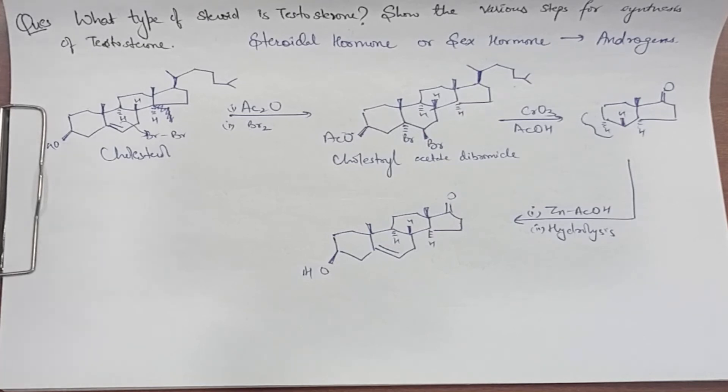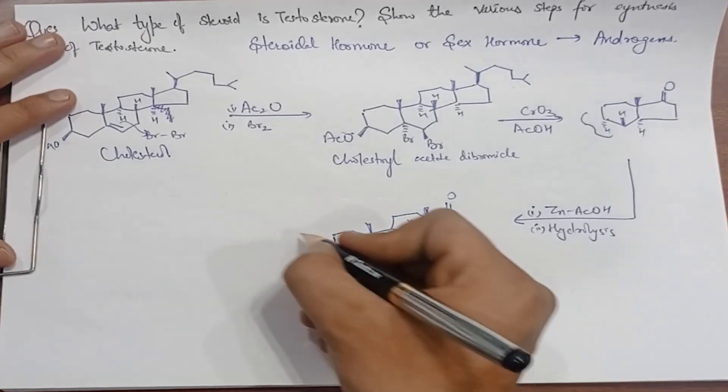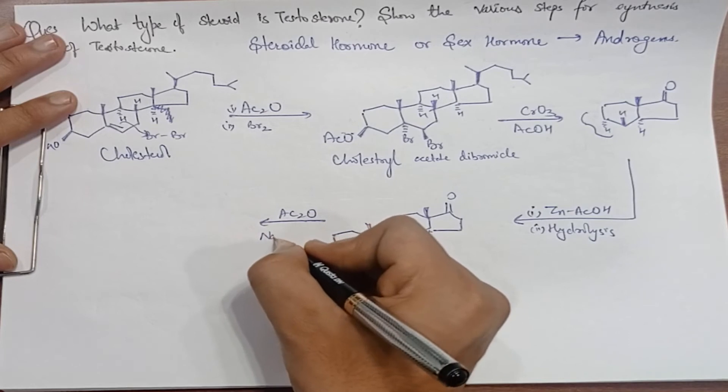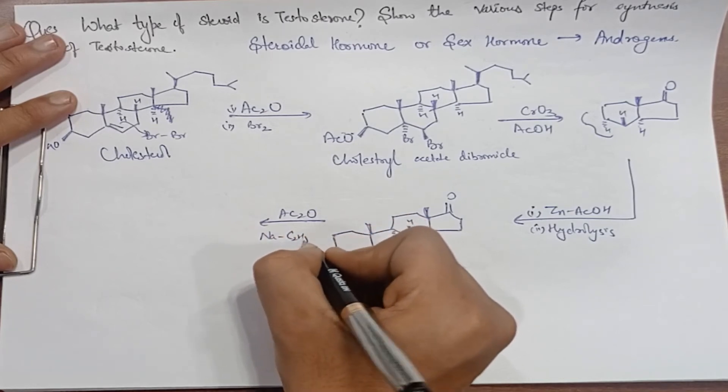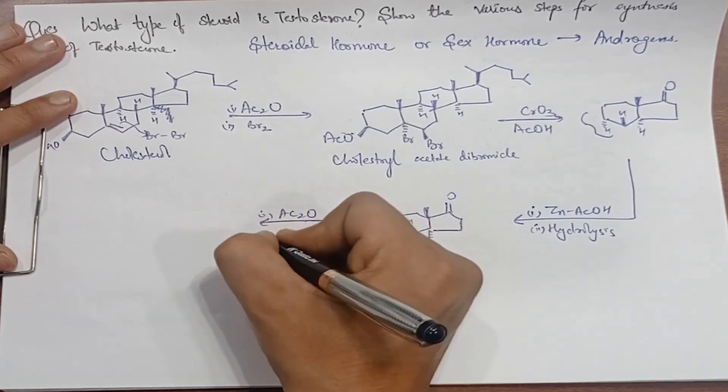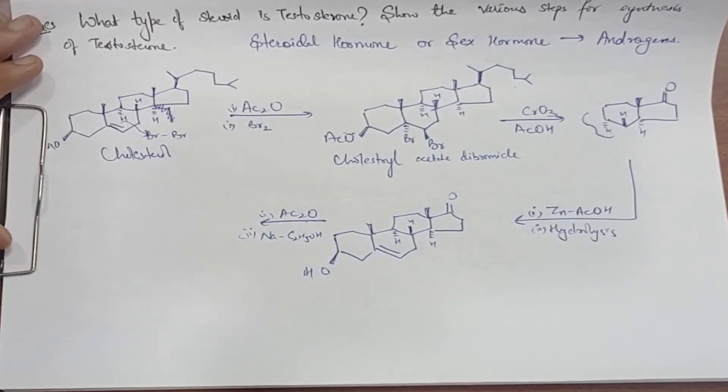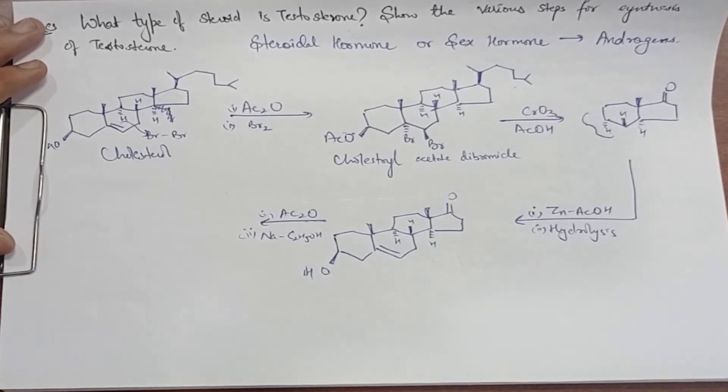Now we will add acetic anhydride and also reduction reagents, that is sodium in ethanol. These are our reduction reagents. What will we have to do? The double bond O will change to OH. The double bond O will change to OH.